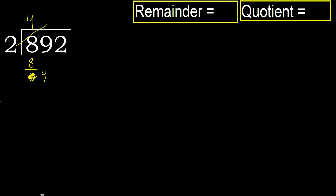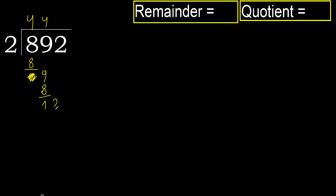2 multiplied by 5 is 10, which is greater. 2 multiplied by 4 is 8, which is not greater. Subtract.